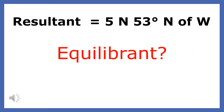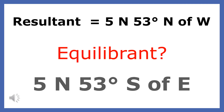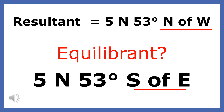Imagine you were told that the resultant of two forces was 5 newtons 53 degrees north of west, and were asked to find the equilibrium. All you would have to do is keep the magnitude and angle and reverse the direction. So 5 newtons 53 degrees north of west would have an equilibrium of 5 newtons 53 degrees south of east.